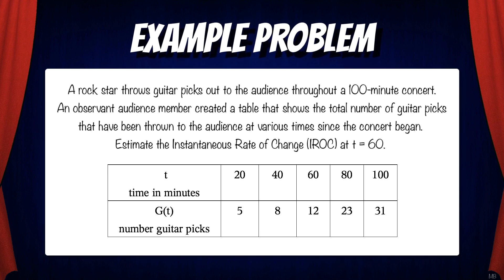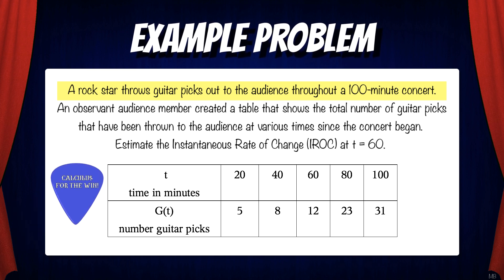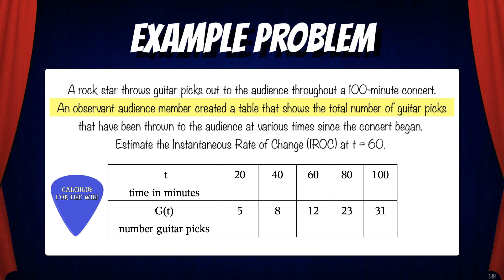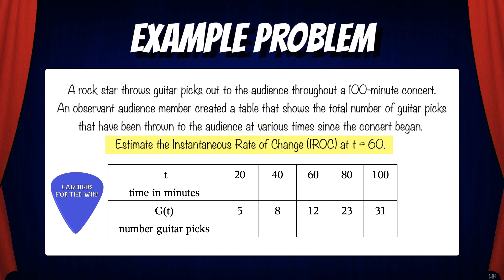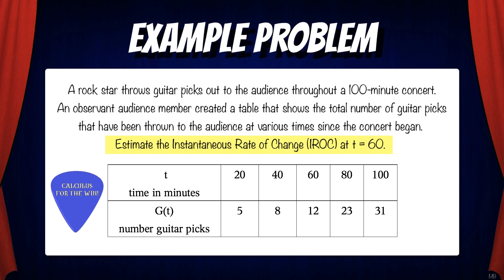Let's jump into an example problem. A rock star throws guitar picks out to the audience throughout a 100-minute concert. An observant audience member created a table that shows the total number of guitar picks that have been thrown to the audience at various times since the concert began. Estimate the instantaneous rate of change at t equals 60.